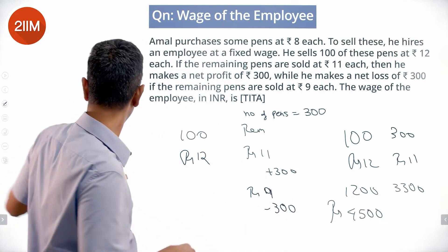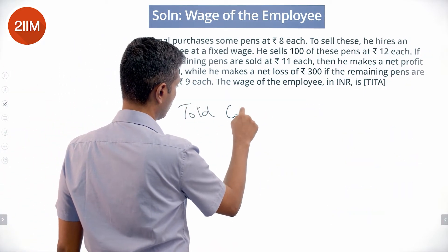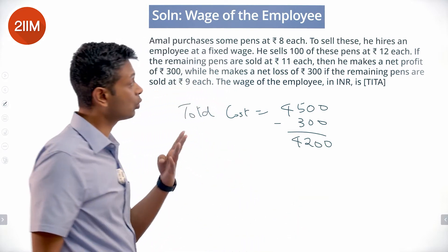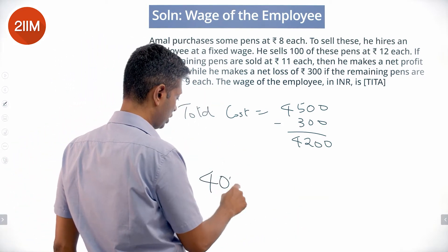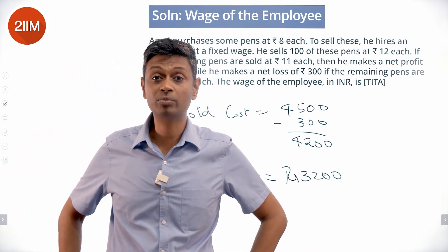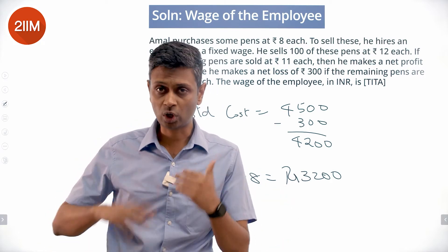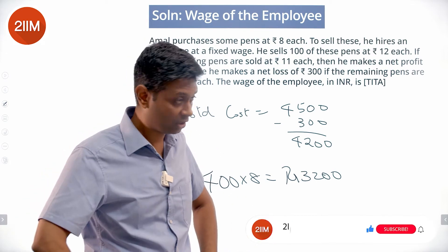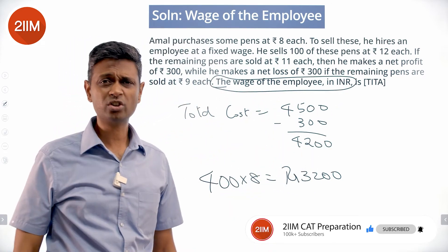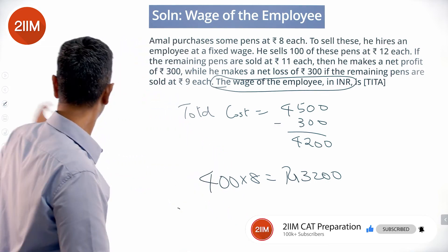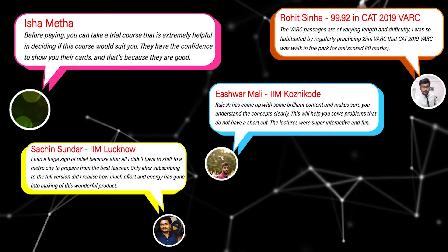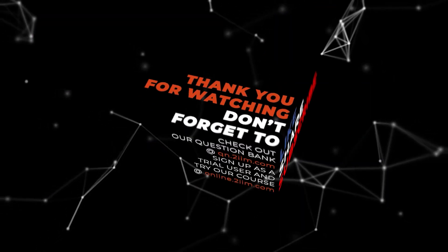His total cost is Rs. 4500 minus Rs. 300 profit, which is Rs. 4200, for selling 400 pens. He buys them at Rs. 8 each, so 400 × Rs. 8 = Rs. 3200 is the total purchase cost. But his total landed cost is Rs. 4200, so it cost him Rs. 1000 to sell. Cost of purchase is Rs. 3200, total cost is Rs. 4200, so the employee wage is Rs. 1000.